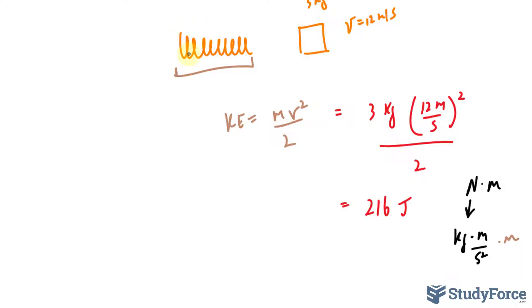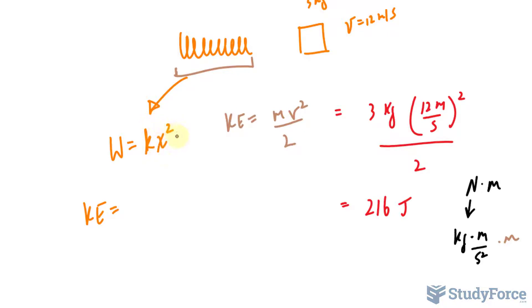Now there are two things this energy needs to overcome: the work required to compress the spring, and the work required to overcome friction. The kinetic energy goes into compressing the spring, and the work required to compress a spring is given by the formula: work equals k times x squared over 2, where x represents the distance it gets compressed. The kinetic energy also goes into the work required to overcome friction.